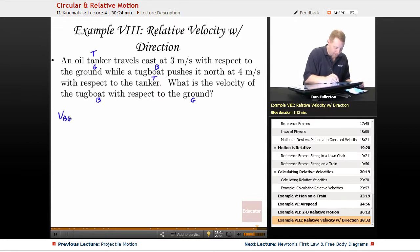We want the velocity of the tugboat with respect to the ground, which equals the velocity of the tugboat with respect to the tanker, plus the velocity of the tanker with respect to the ground.